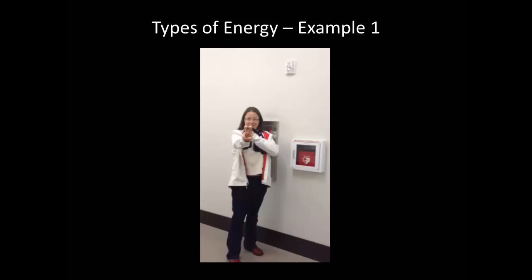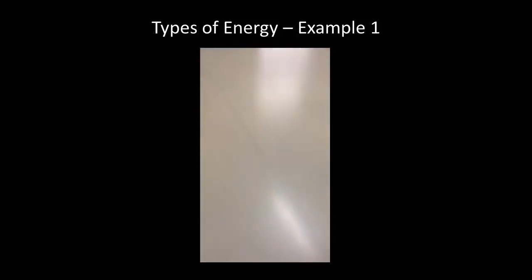So the monkey starts with elastic potential energy and gravitational potential energy. When the rubber band is released, that elastic potential energy is converted to kinetic energy, and then as the monkey falls, the gravitational potential energy is converted into kinetic energy. And when it lands just before landing on the ground, it has the greatest amount of kinetic energy.